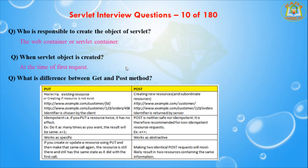In the GET method, data is exposed in the URL; in POST, data is not exposed. GET can be bookmarked, whereas POST cannot be bookmarked. GET is an idempotent method and POST is a non-idempotent method. GET is more efficient and used more than POST, while POST is less efficient.